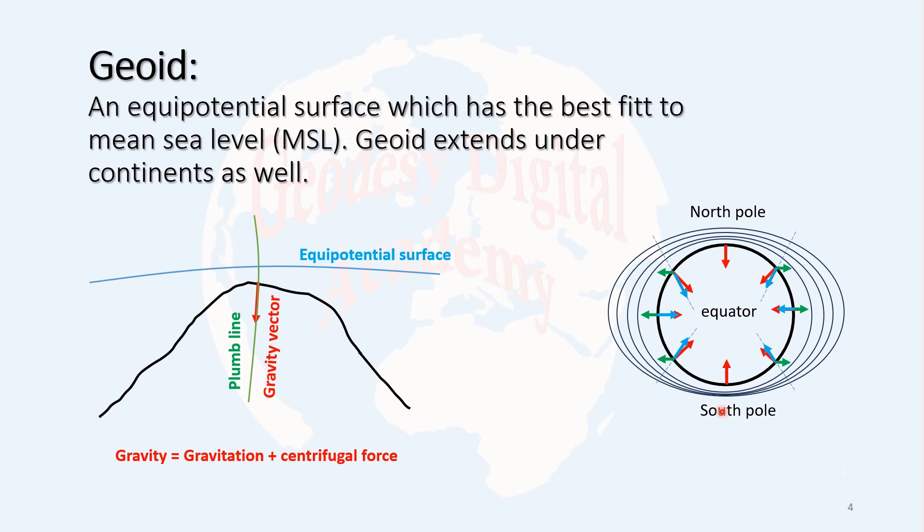Since the equipotential surface is perpendicular to the direction of the gravity vector, they are in the form like an ellipse, but in reality not an ellipse because of the mass heterogeneities inside the Earth. The equipotential surfaces are not parallel, and there are infinite number of equipotential surfaces because there are infinite number of points along the plumb line.